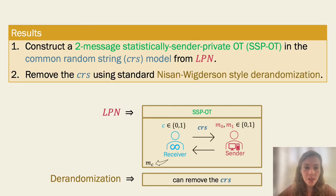and then we show that we can actually remove the CRS using a standard Nisan-Wigderson-style derandomization assumption. So overall, we get that we can have an SSP-OT protocol in the plain model using LPN and derandomization.